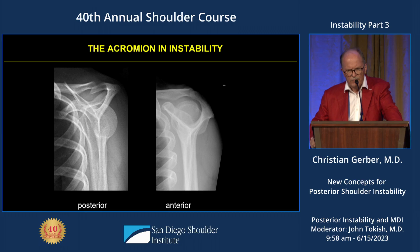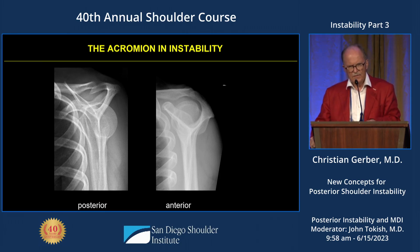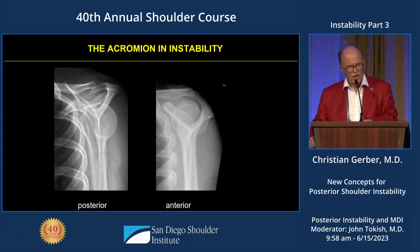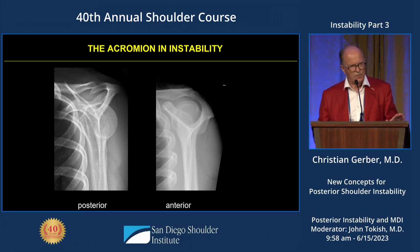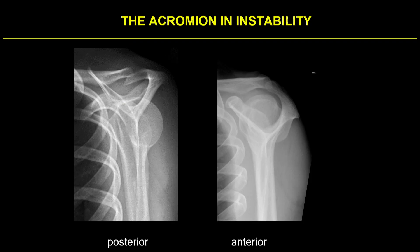Just use the near view. Look at the posterior instability case on the left and the anterior instability on the right. Yesterday we had a session on B1 and B2 glenoids — 100% of the cases that were presented had an acromion as you see on the left side. Nobody was alluding to it, nobody was talking about it, but it was absolutely constant. So we wanted to know: is this systematically so?